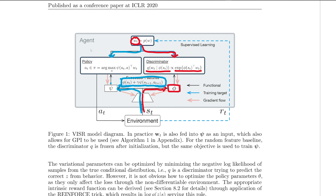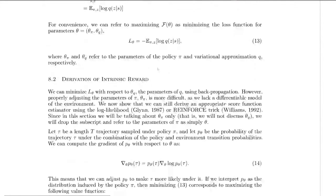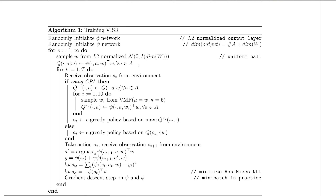The actions taken in this environment come from taking the dot product of the successor features we're learning with the task vector. That gives us a Q function. If we take the maximum action over those Q values, we get our policy. We keep doing this until the end of an episode, and then we sample a new w and repeat. There's also an algorithm box here — I recommend pausing the video to look it over if you're confused. I skipped the GPI part, which I'll explain briefly in a second, but it's not really essential to the algorithm.